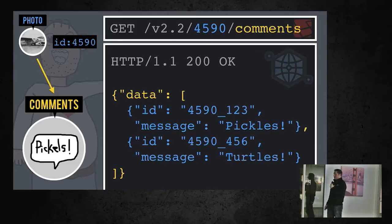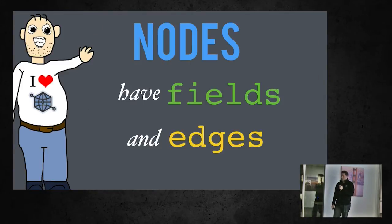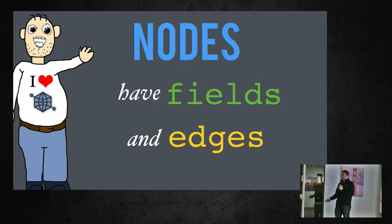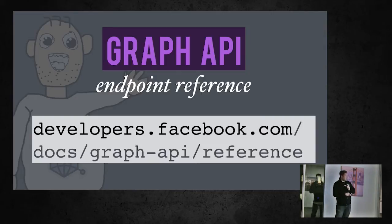If you're using one of the SDKs, you don't have to manually handle the data key in responses. Nodes have fields and edges — fields are basically attributes. The Graph API endpoint reference can be found at developers.facebook.com. The most important URL throughout this entire talk is developers.facebook.com — this is the entry point to everything you want to do on the platform.